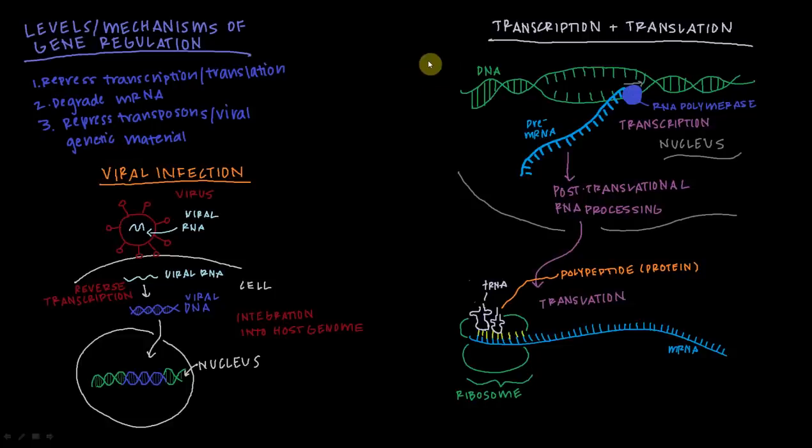RNAi can be used to repress transposons. And what are transposons? They're simply jumping genes. They're sections of genetic material, of DNA, that can get up and move around in chromosomes or between chromosomes. And the RNAi pathway is really important in repressing them from having deleterious effects in the cell.